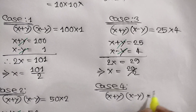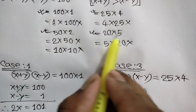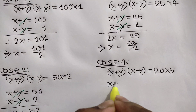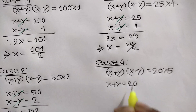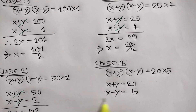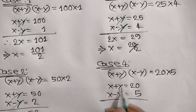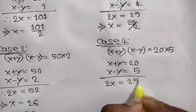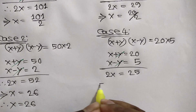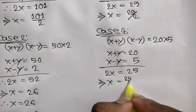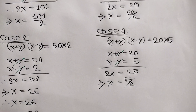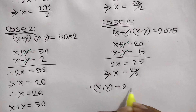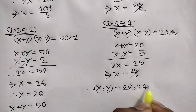Case 4: x plus y times x minus y equals 20 times 5. So x plus y equals 20 and x minus y equals 5. Adding these two equations, we get 2x equals 25, so x equals 25 over 2. This is also rejected as it is fractional. So finally we get x, y equal to 26, 24.